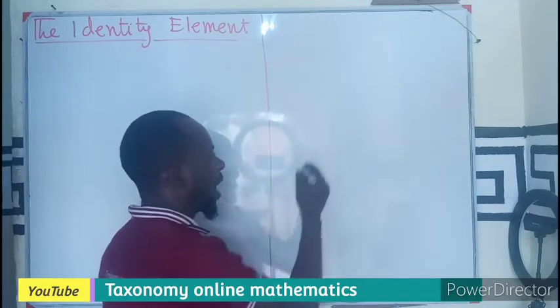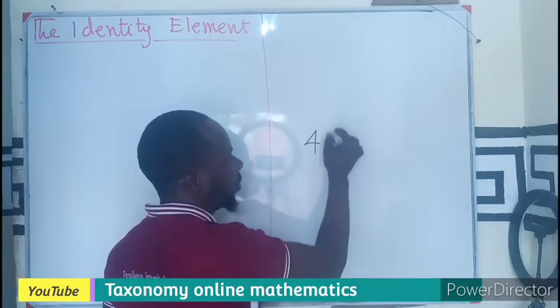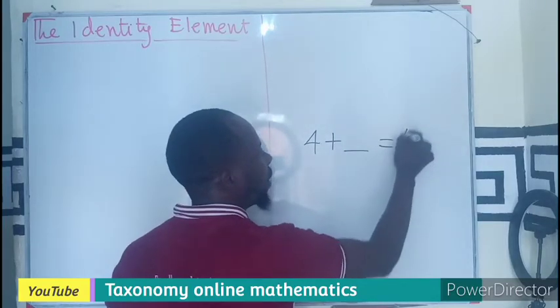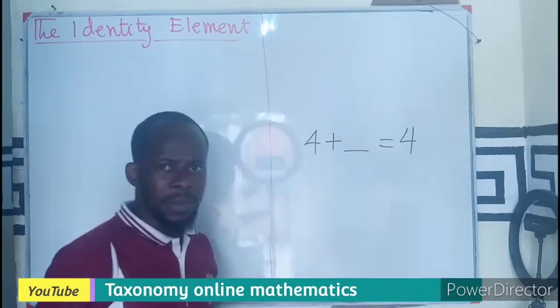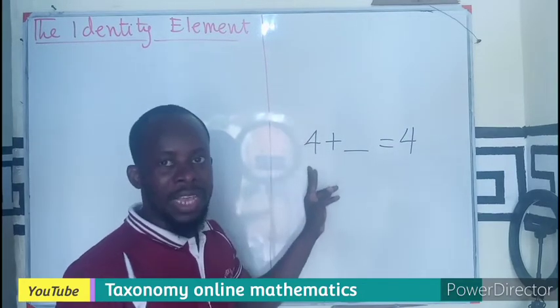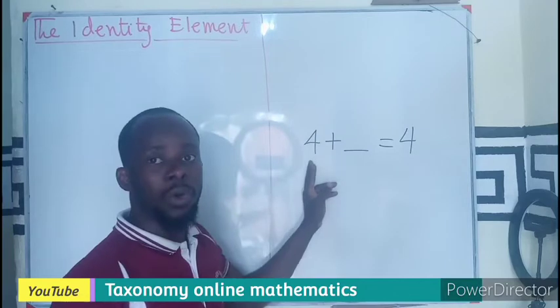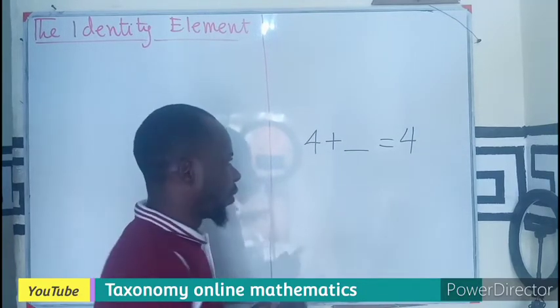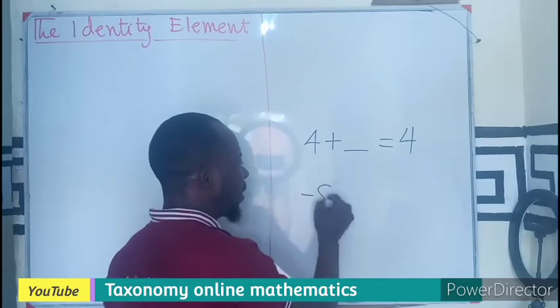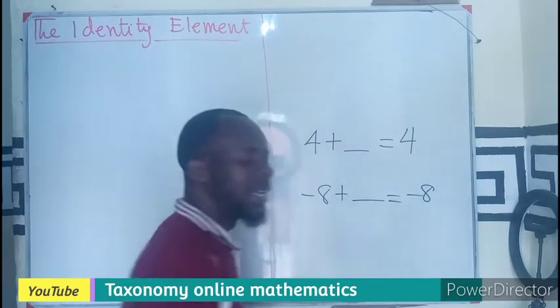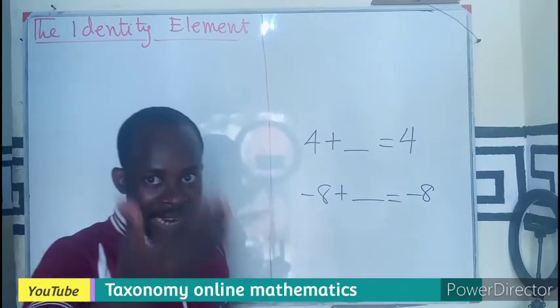We know that if I have 4 plus a certain number to give me 4, the identity element of 4 is just a number added onto 4 to give me 4. That's the identity element. Similarly, if I have negative 8 plus a certain number, I still get negative 8. That is the identity element.